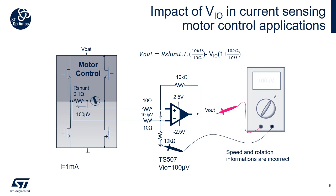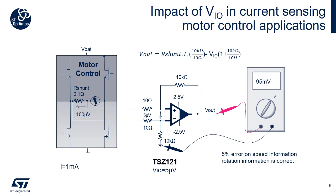Moreover, this negative output will indicate to the MCU that the motor is rotating in the reverse direction, which is totally incorrect. This shows how the VIO of the OpAmp can impact the entire application if the OpAmp is not chosen carefully. If we use a precision amplifier with a chopper architecture like ST's TSZ121 with a VIO of 5 µV at ambient temperature, we will make an error of only 5% on the motor speed, which is really acceptable when using a gain of 1000.